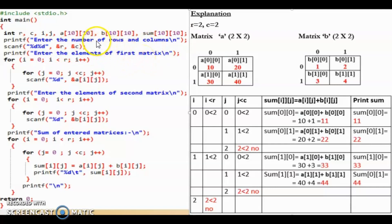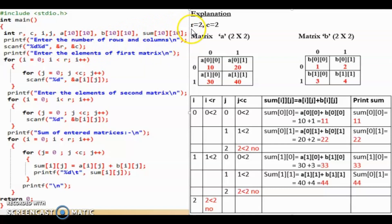We ask the user to enter the number of rows and columns for both matrices only once, because we can only add two matrices when they have the same number of rows and columns. Suppose the user enters r as 2 and c as 2.